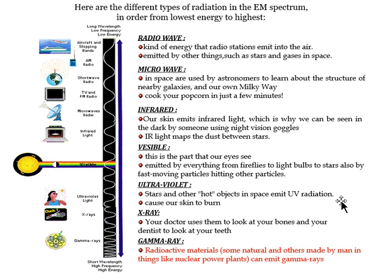Visible light is the part of the spectrum our eyes can see, emitted by everything from fireflies to light bulbs to stars. Ultraviolet radiation is emitted by stars and other hot objects in space — it causes skin to burn and is harmful to eyes, but is protected against by our ozone layer. X-rays are used by doctors to look at bones and by dentists to examine teeth. Gamma rays are emitted by radioactive materials.